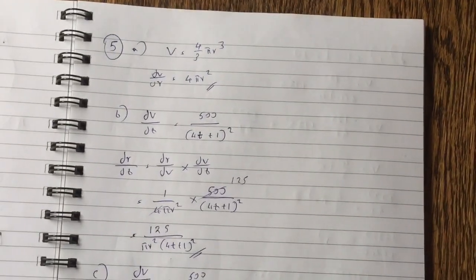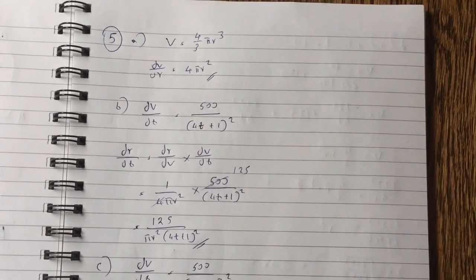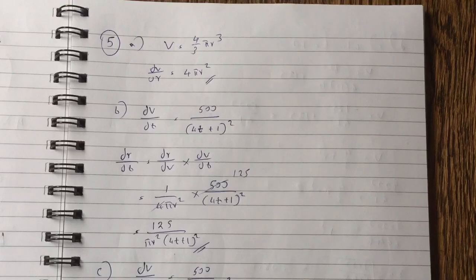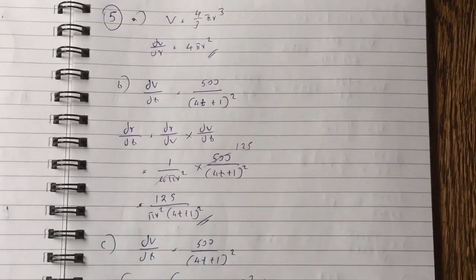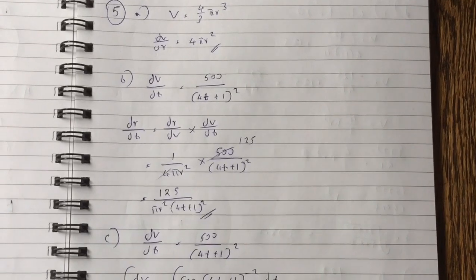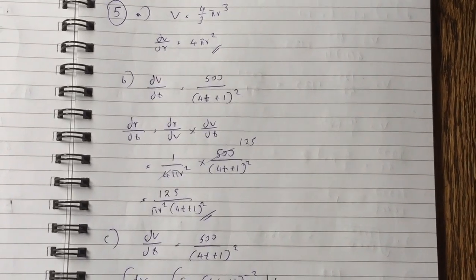Question 5, this is a rates of change question. Volume equals 4 third pi r cubed. So dv dr equals 4 pi r squared. dv dt is 500 over 4t plus 1 squared. That's given in the question.